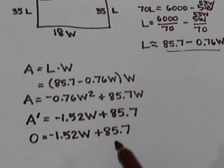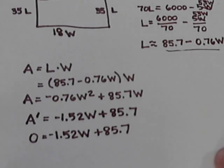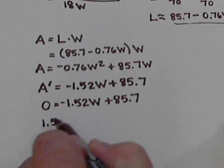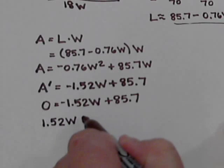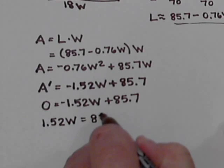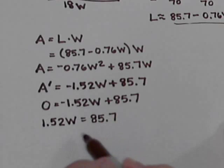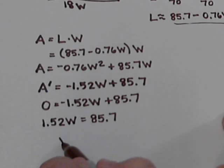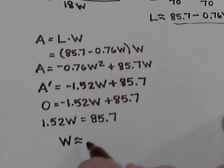And solve it for the W. Move the 1.52W to the left, becomes a positive, equals 85.7. And now if we divide by 1.52, this gives us a value of W of about 56.4 feet.